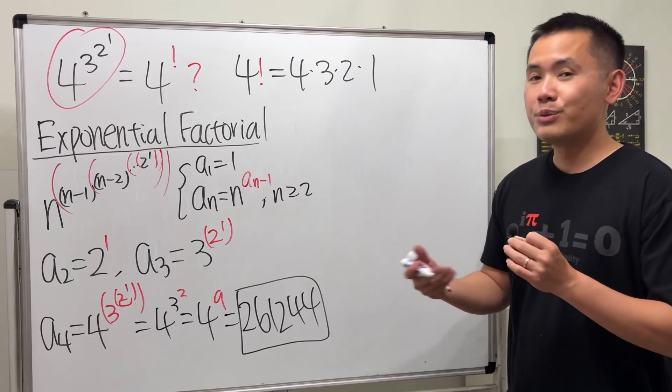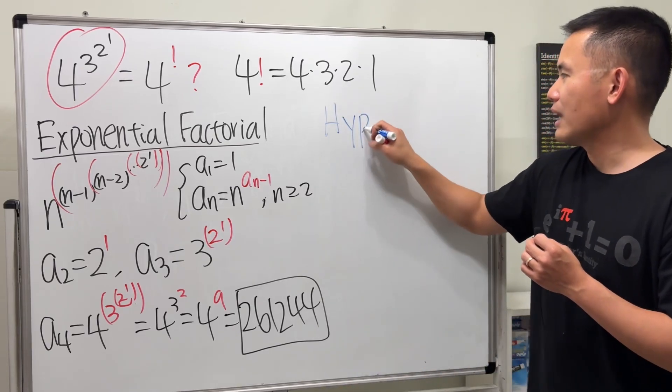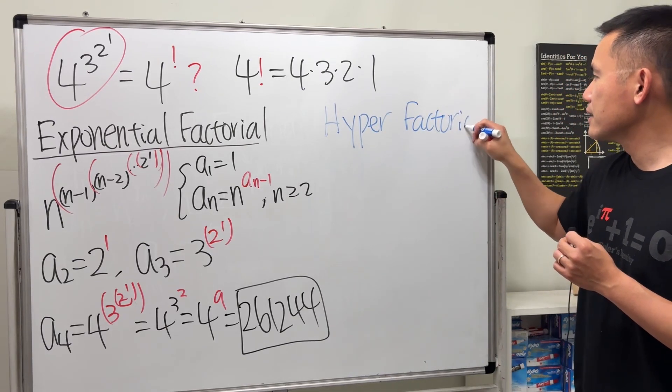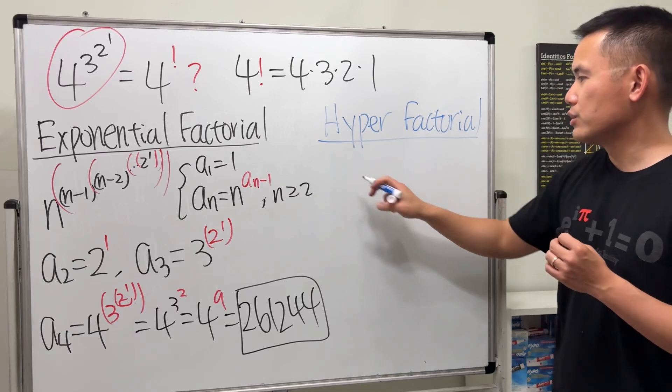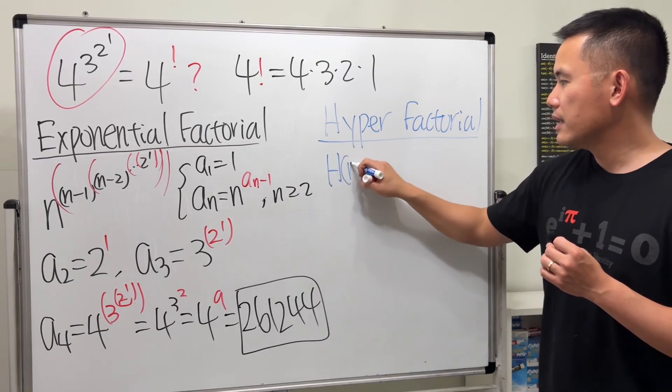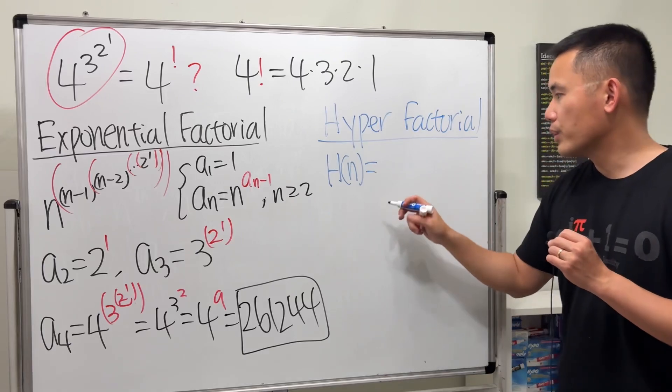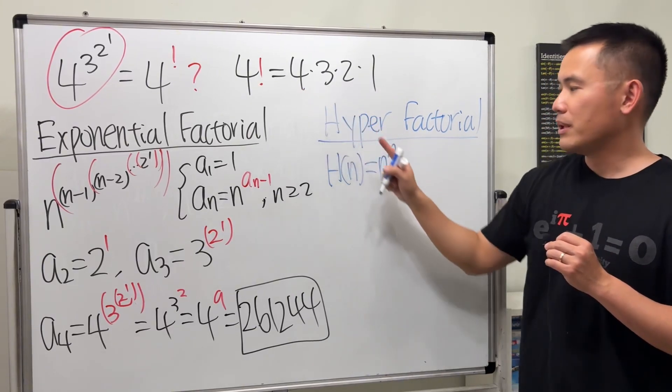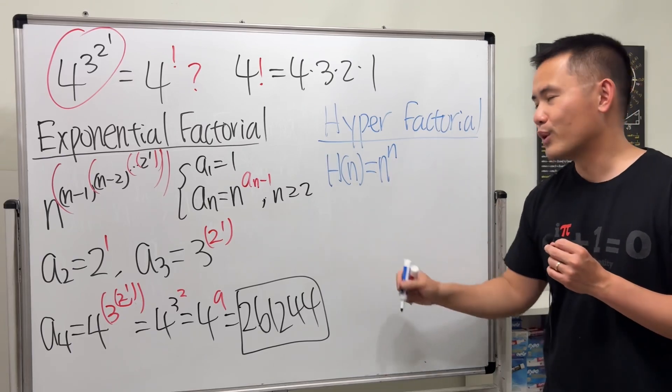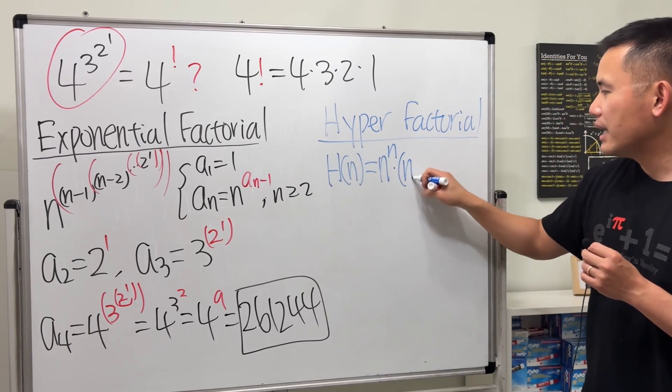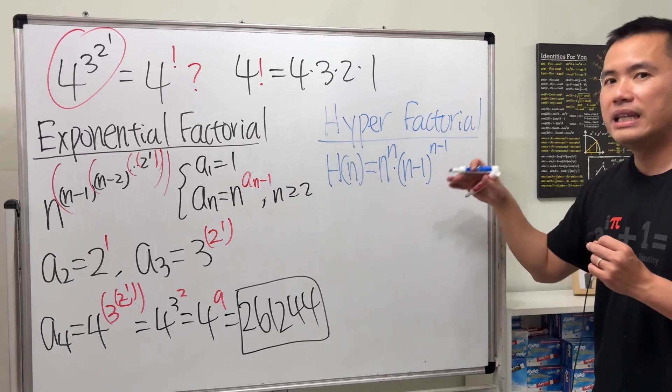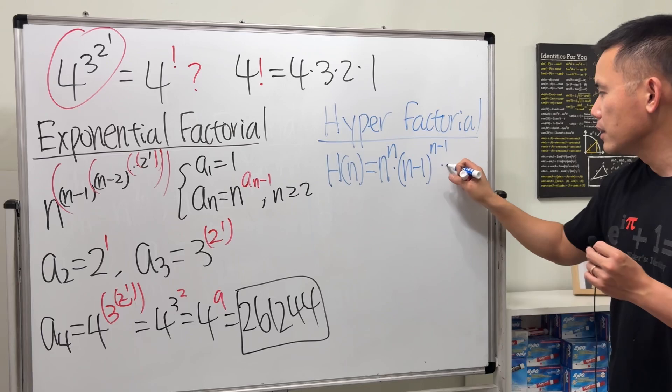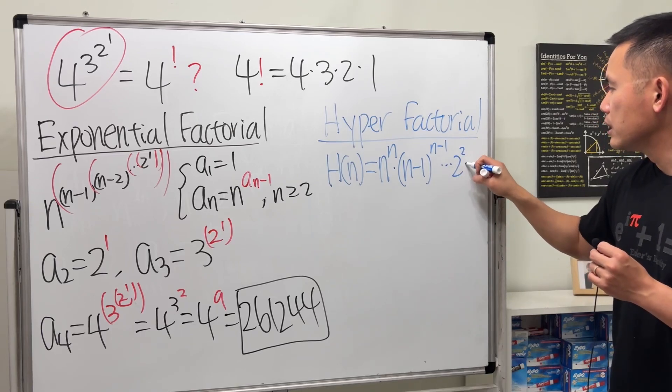The name is pretty cool though. It's called the hyper factorial. We do have a nice notation for that. It's H of n. This right here is equal to n to the n, so not only you have the number, but you also raise that to itself for the power. And then you multiply by n minus 1 to the n minus 1, and then the next number to the next number power, and so on, until we finish it at one, so one to the one.